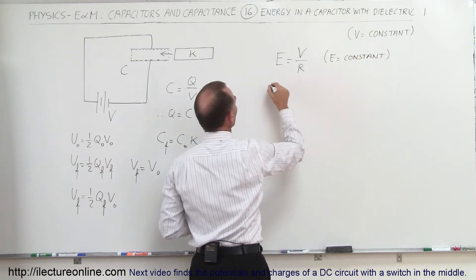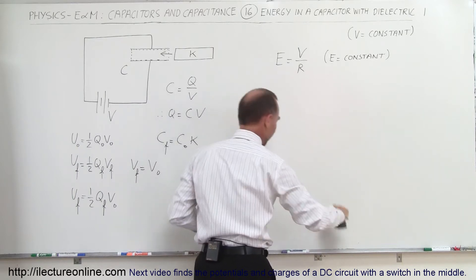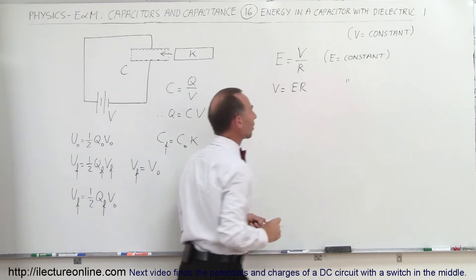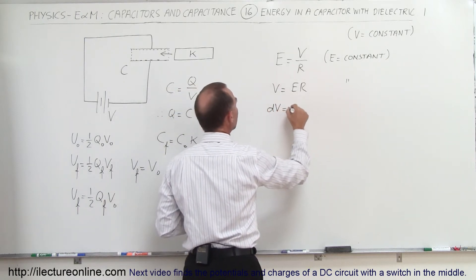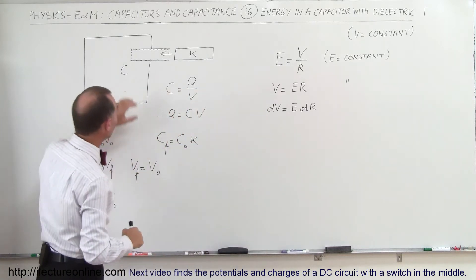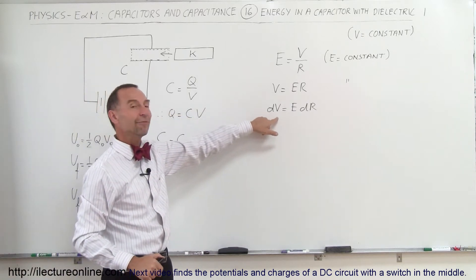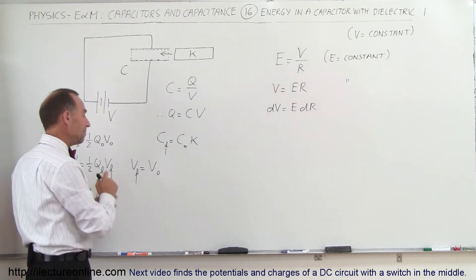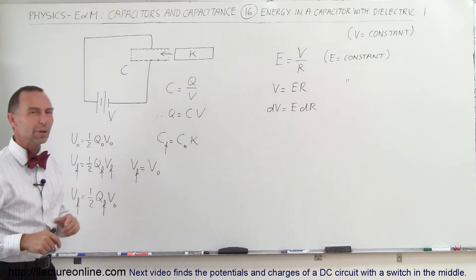We can write V equals E times R when E is constant, and in differential form dV equals E dR when E is not constant. If we can calculate the electric field between the plates after inserting the dielectric, we can then find the change in voltage — which we know remains the same. That's the strategy for figuring out what the new energy will be in the capacitor.